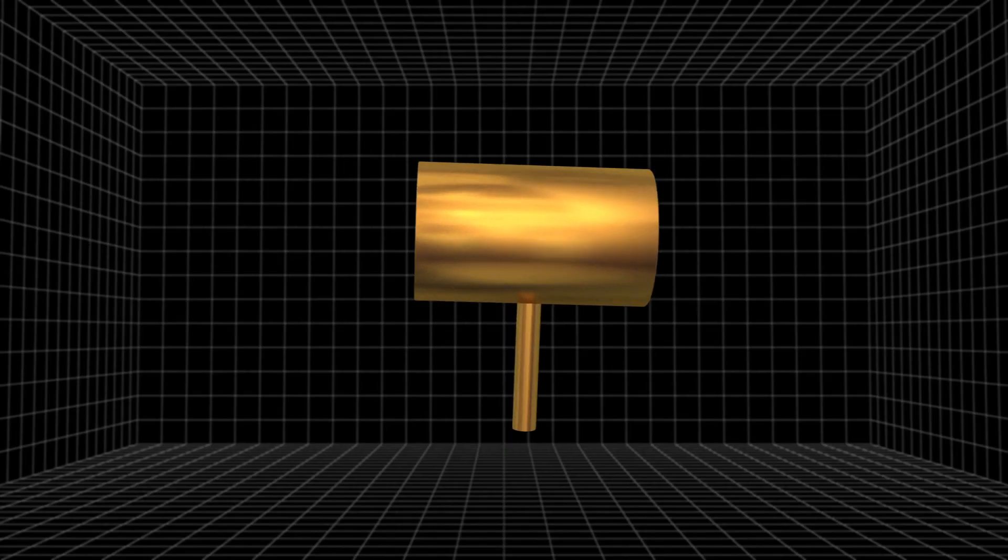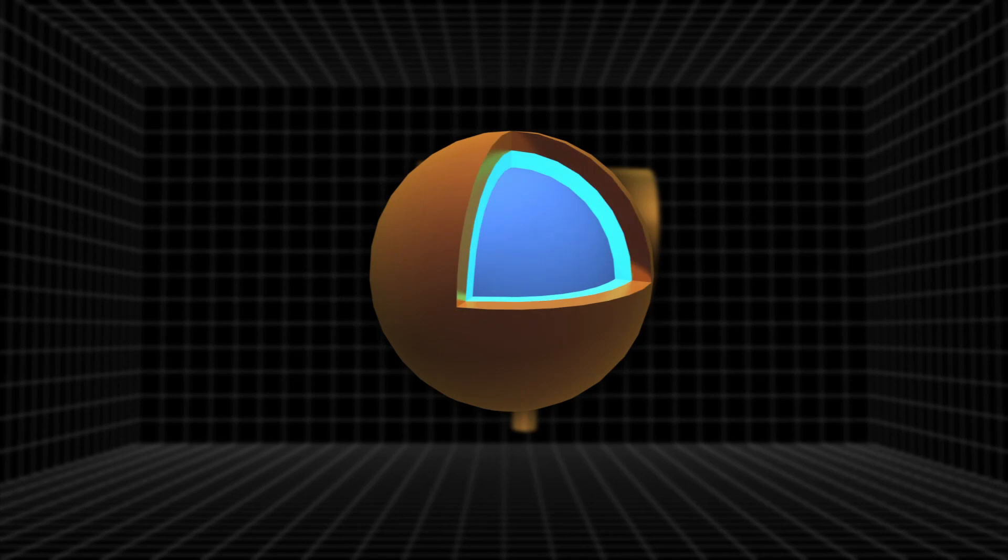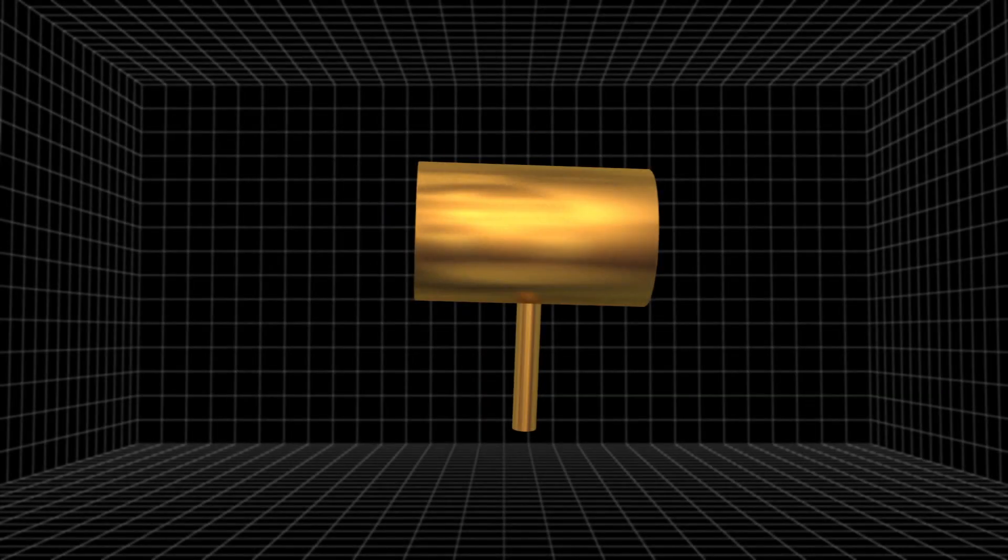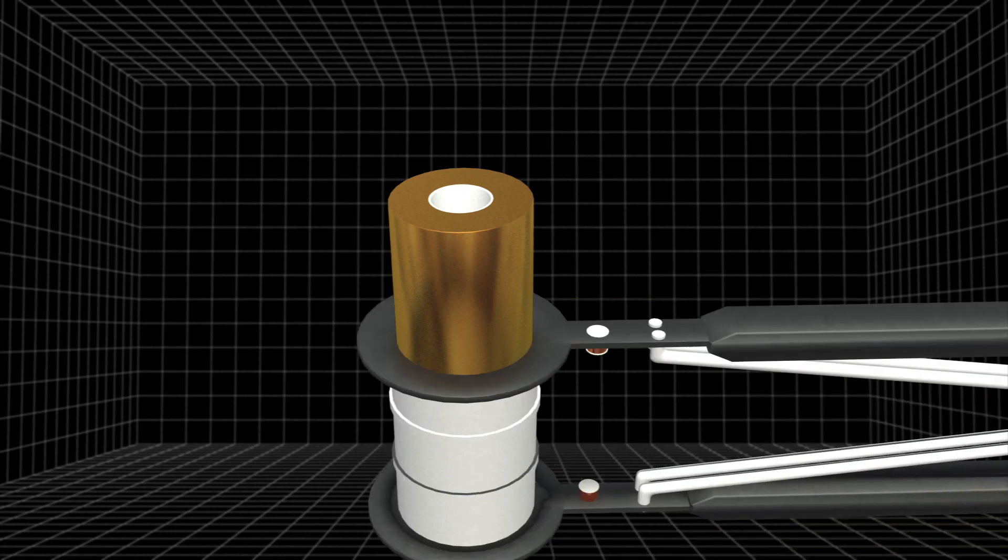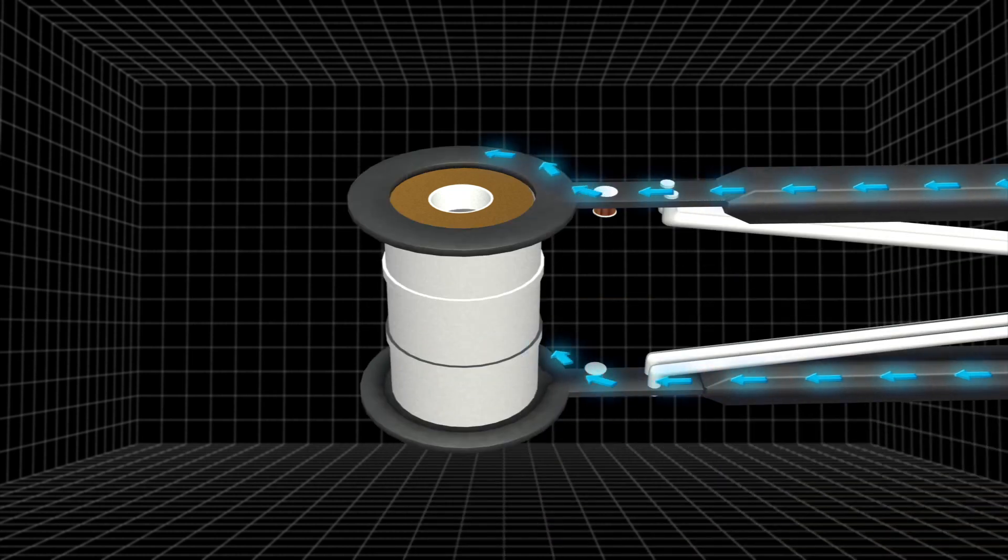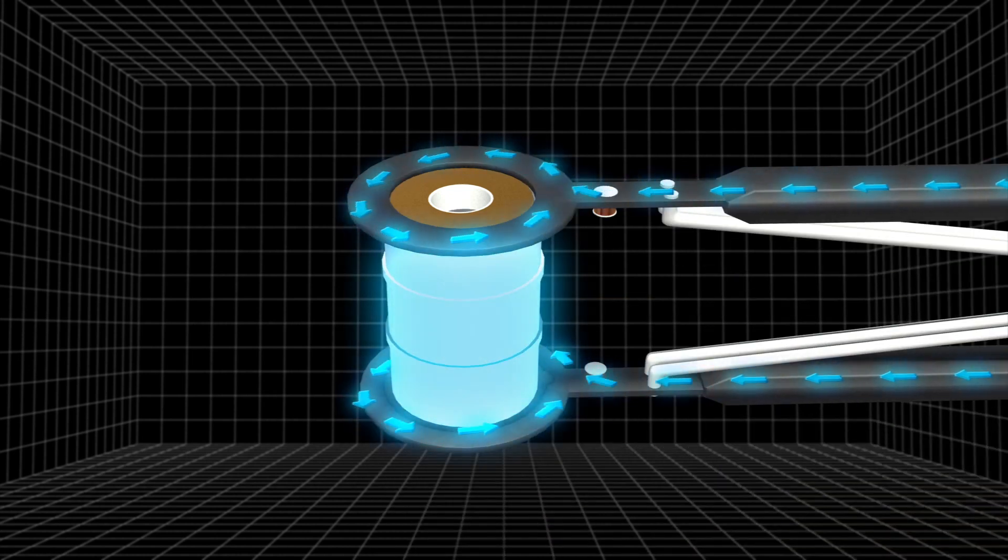The National Ignition Facility's fusion experiment employs a 10 mm long target container known as a Holraum. Inside the Holraum is a fuel pellet containing deuterium tritium. The Holraum is then placed inside a cryogenically cooled holder that keeps it at a steady temperature of 18 degrees Kelvin.